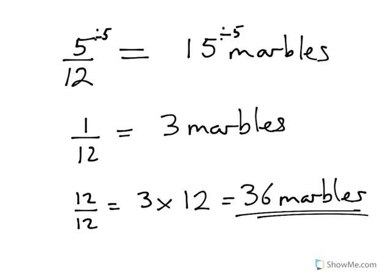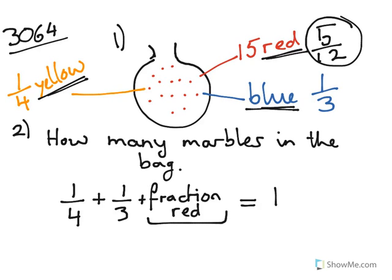Now, are we sure we've done the right thing? Well let's go back and check. We know that one third of them are blue, which is the same as four twelfths, is it not? Four twelfths. Okay. What is four twelfths of thirty-six? That's the same as four times three equals twelve marbles. So I would expect to have twelve blue marbles.